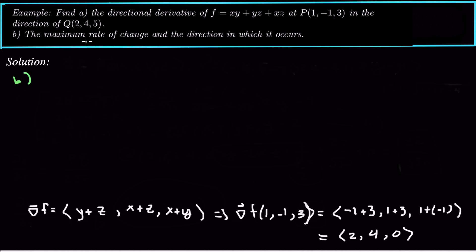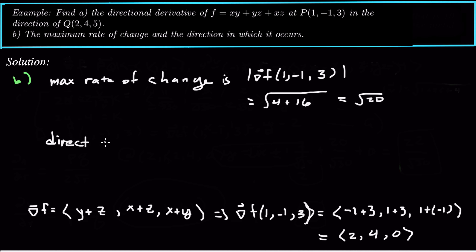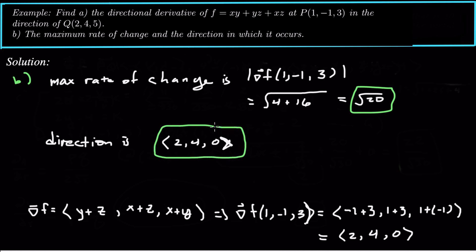For part b, we need to find the maximum rate of change and the direction in which it occurs. The max rate of change is always the magnitude of the gradient: the square root of 2² + 4² = square root of 4 + 16 = square root of 20. The direction in which it occurs is just the direction of the gradient, which is (2, 4, 0). Sometimes the problem may ask for this as a unit vector.